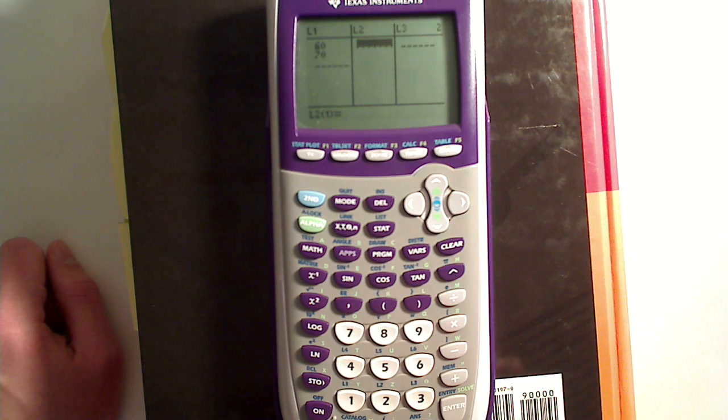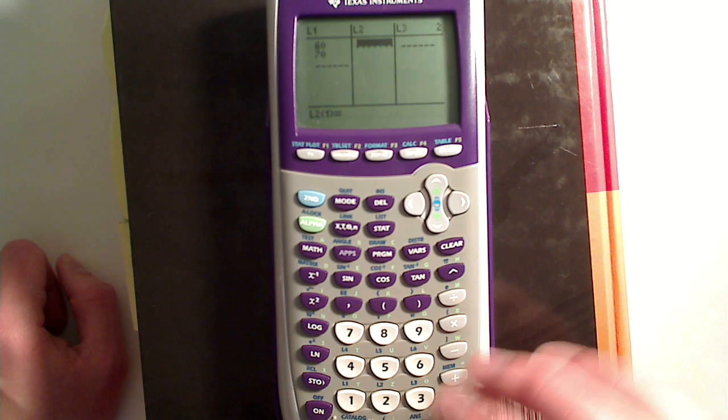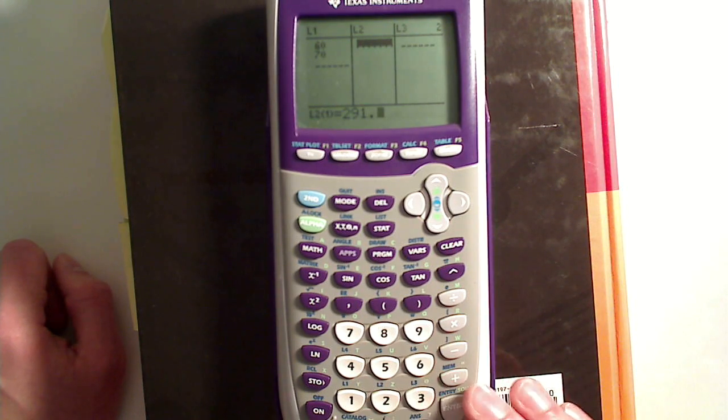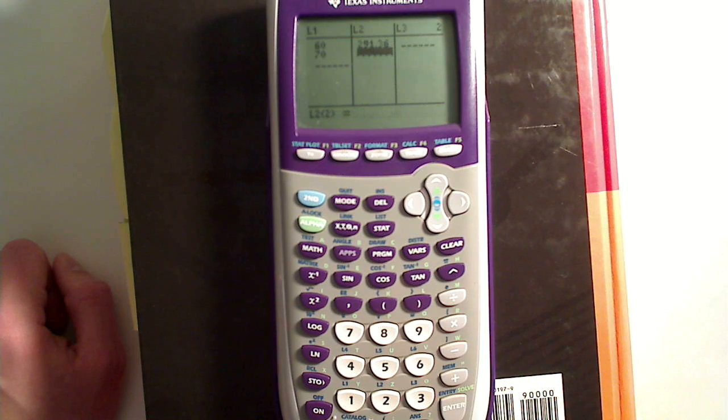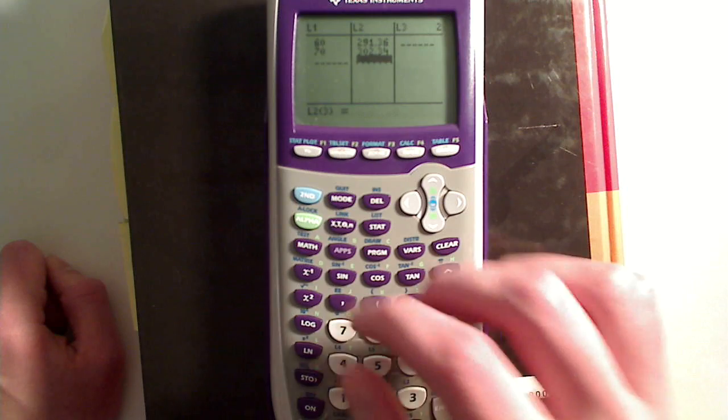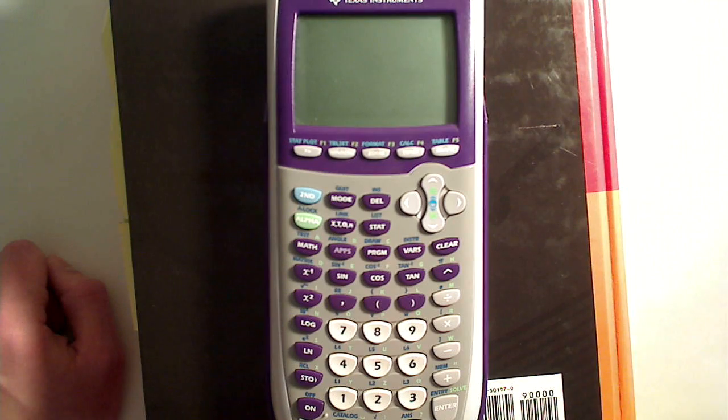We have values at the table between 60 degrees and 70 degrees. We're going to put those in L1. And the corresponding enthalpies is 291.36 kilojoules per kilogram. And the other one is 302.34 kilojoules per kilogram. All right, so we're just going to exit back to the home screen now.